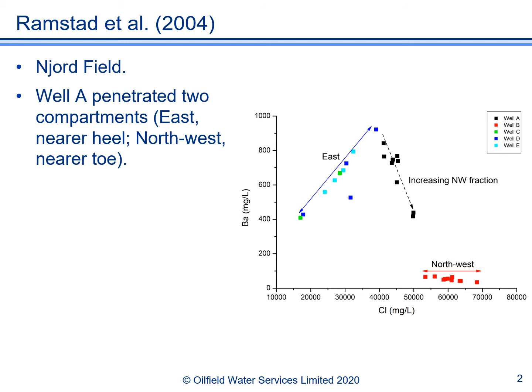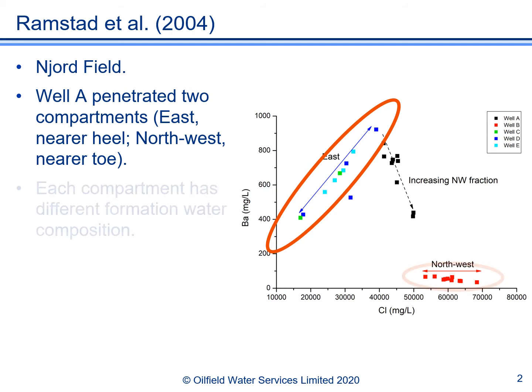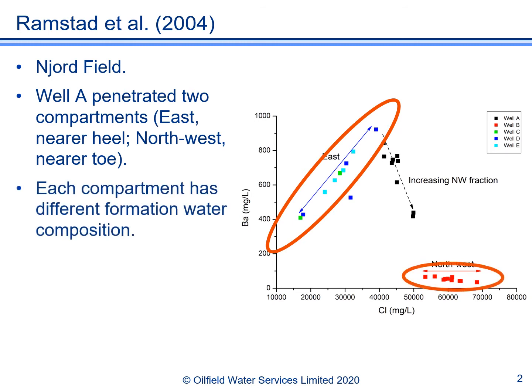You'll notice that the formation water composition in the east compartment is variable, with barium being positively correlated with chloride concentrations. Whilst in the northwest compartment, chloride concentrations are higher and also variable, but the barium concentrations are fairly constant and lower than in the east compartment.